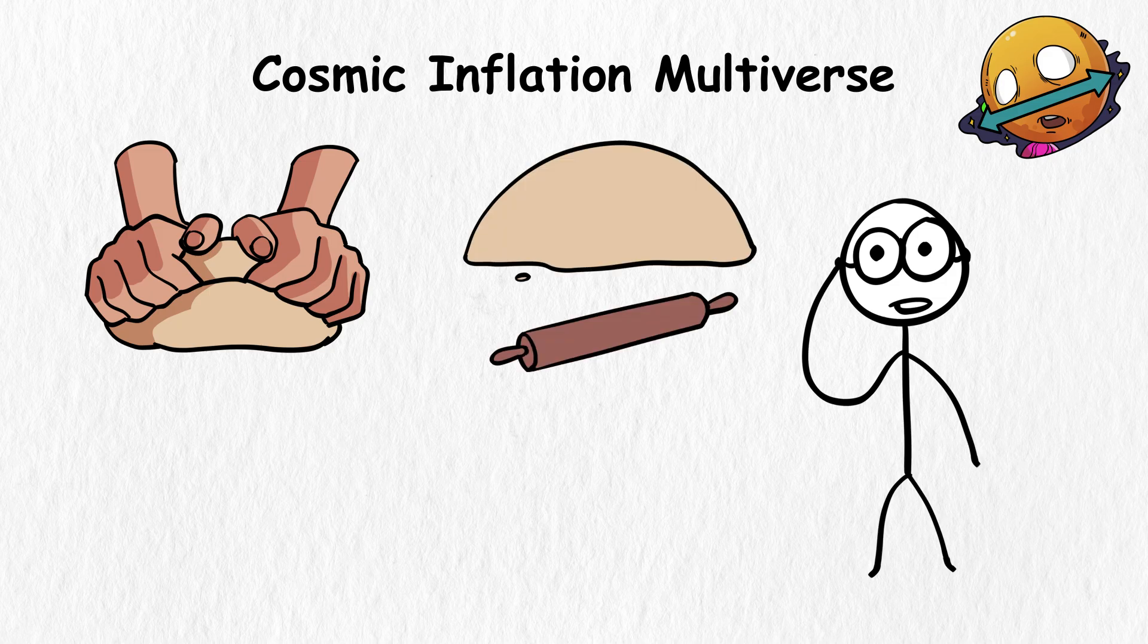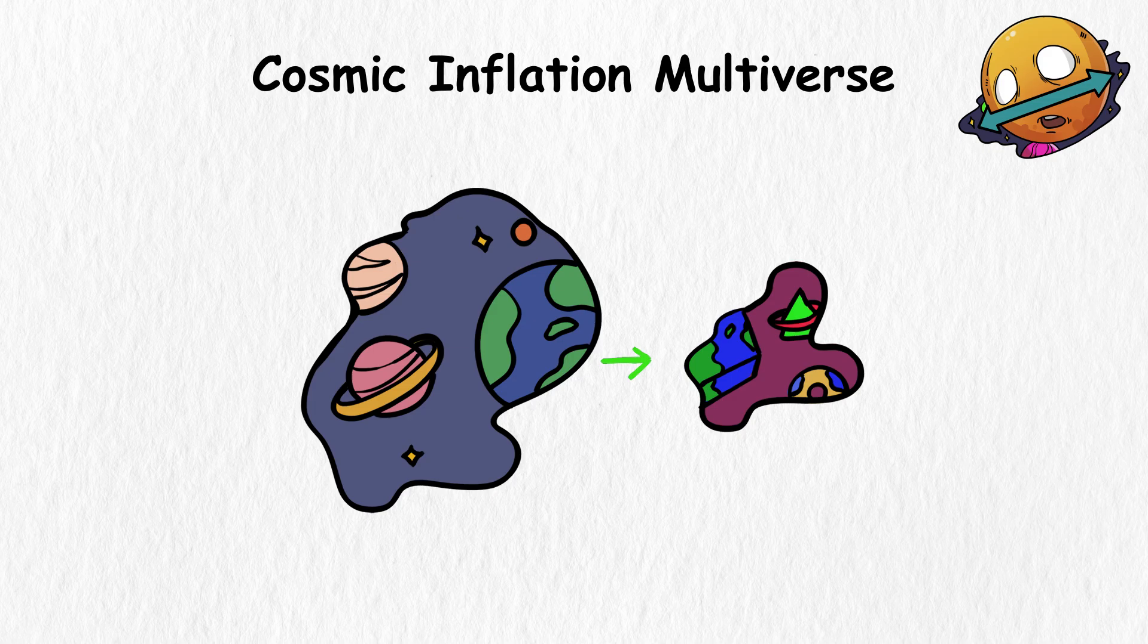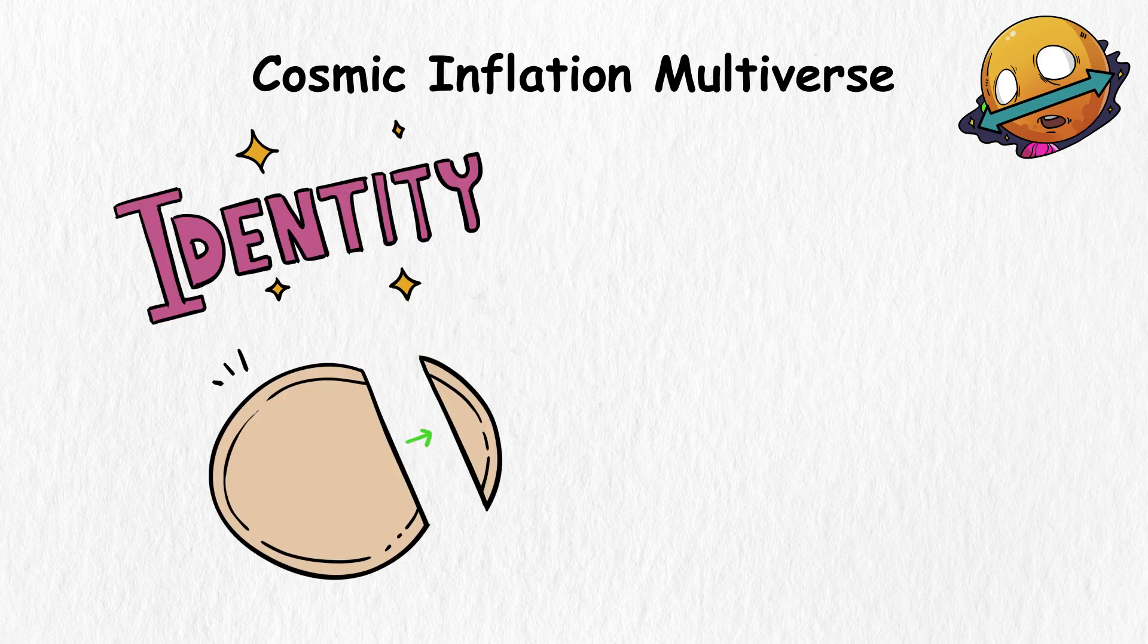When you're kneading a large piece of dough, you can take another smaller piece from it. This small piece can be its own universe, because it already has a different identity from the larger dough. It's essentially a pocket universe.